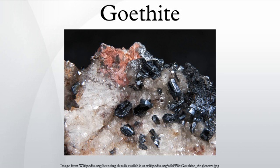Goethite is an iron oxyhydroxide containing ferric iron. It is the main component of rust and bog iron ore. Goethite's hardness ranges from 5.0 to 5.5 on the Mohs scale, and its specific gravity varies from 3.3 to 4.3. The mineral forms prismatic needle-like crystals, but is more typically massive.